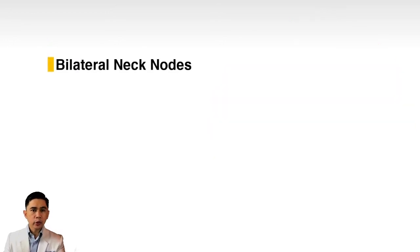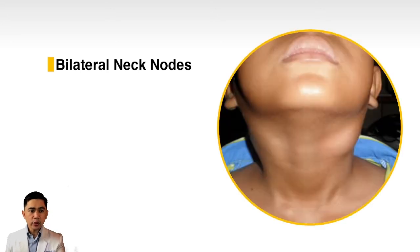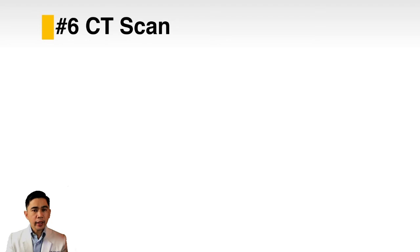For patients presenting with bilateral neck nodes, the primary usually comes from the nasopharynx, tongue base, or midline oral cavity — areas that have bilateral lymph node drainage.